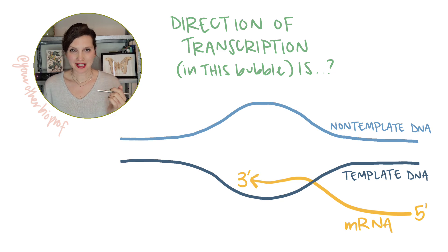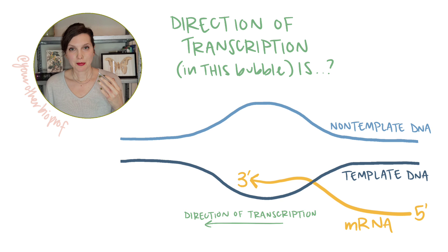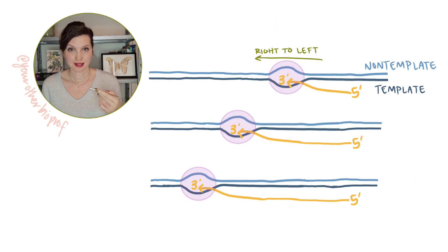So imagine a little arrow on the three prime end of your RNA in progress. That's going to point in the direction of transcription. So here that's from right to left. RNA polymerase will continue in that direction toward the left, denaturing that DNA double helix, so making it single stranded, reading the sequence on the template strand of DNA and adding the correct complementary RNA nucleotide to the three prime end of that growing RNA strand.